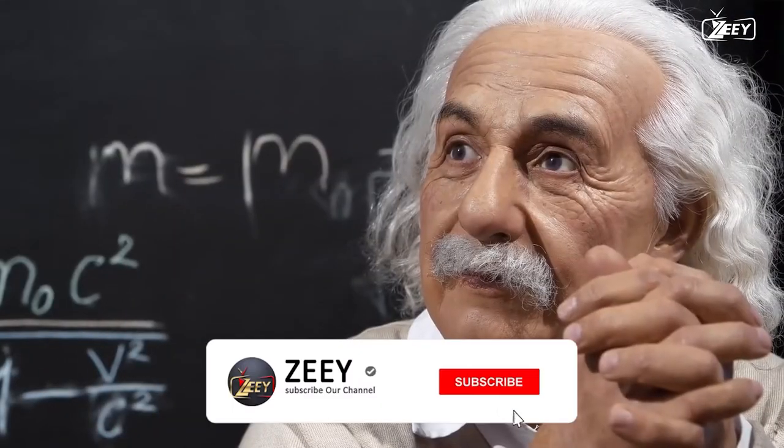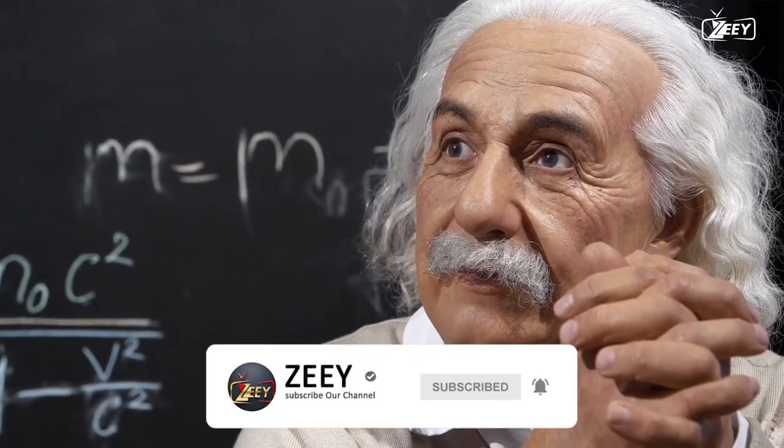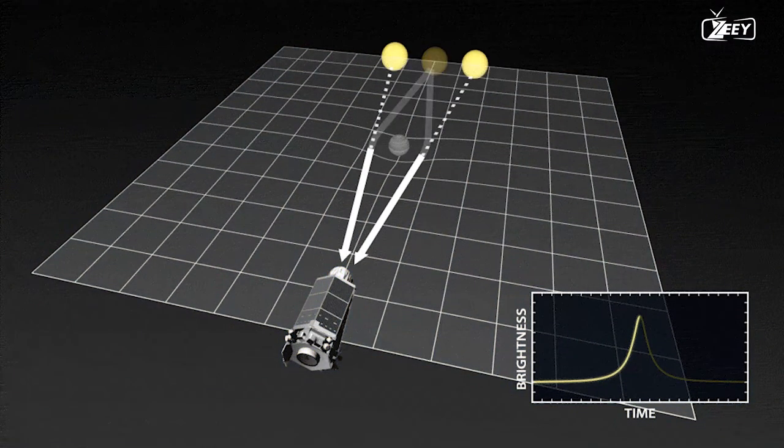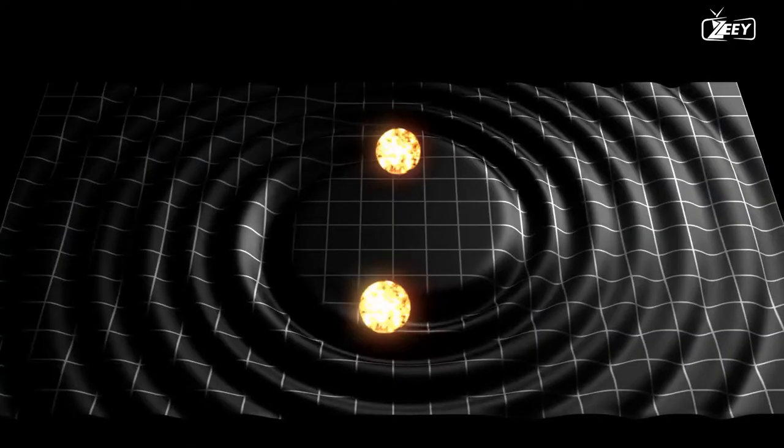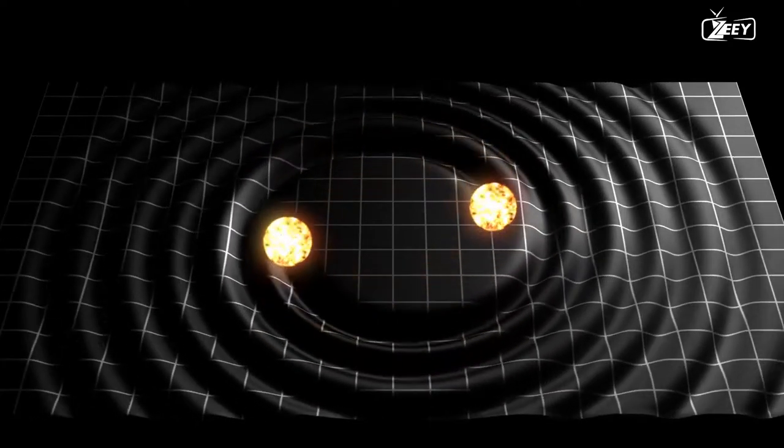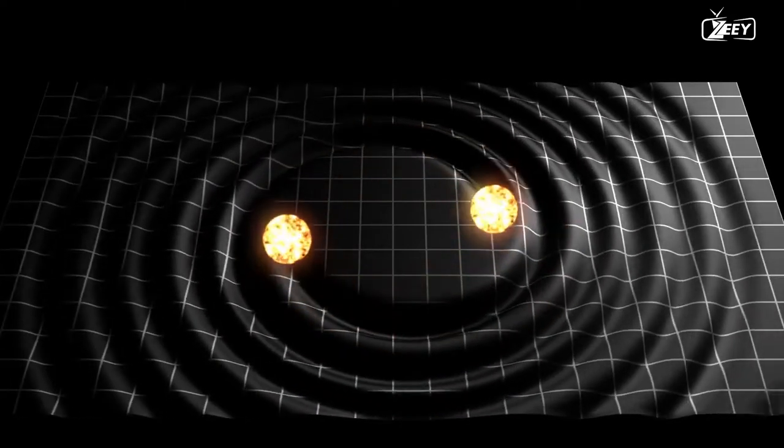Albert Einstein's general theory of relativity made the first prediction about gravitational lensing in 1915, and since then, it has helped astronomers observe the universe more effectively. According to general relativity, massive objects bend spacetime. Imagine putting massed balls on a stretched rubber sheet. The bigger the mass, the more curvature there would be in the rubber sheet.